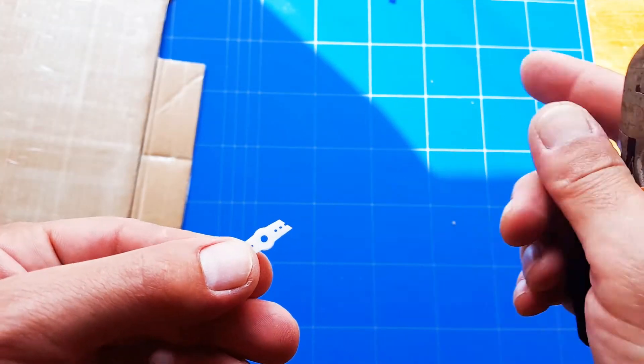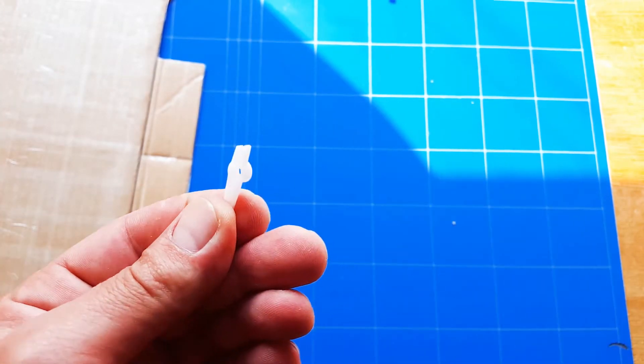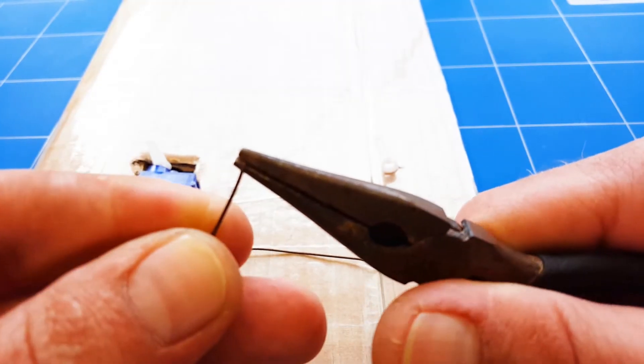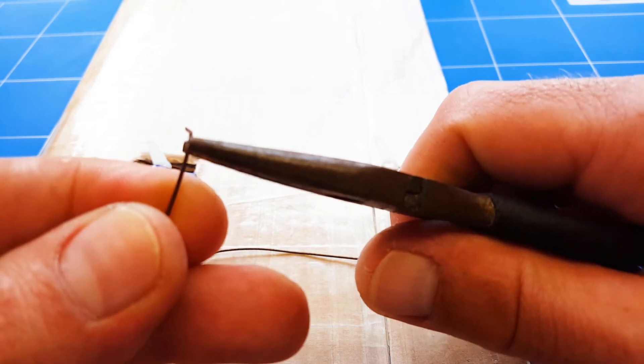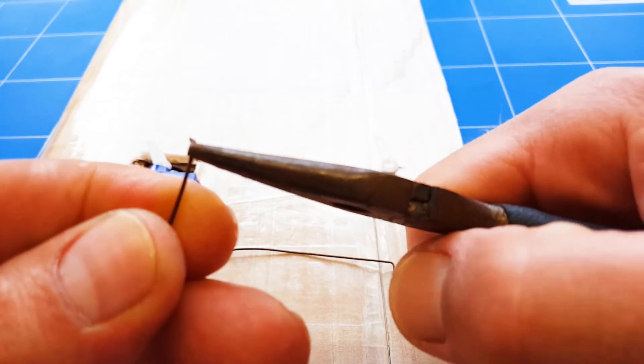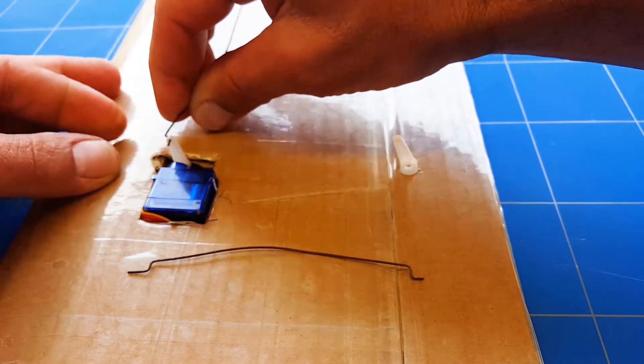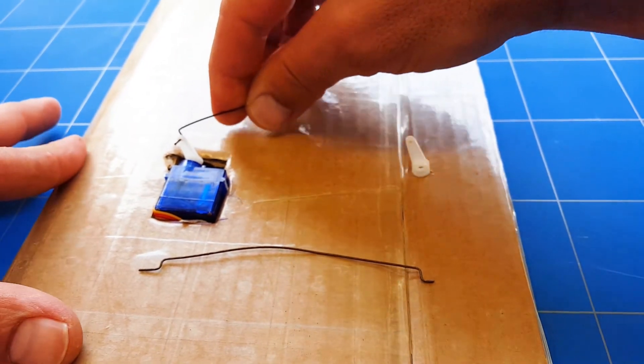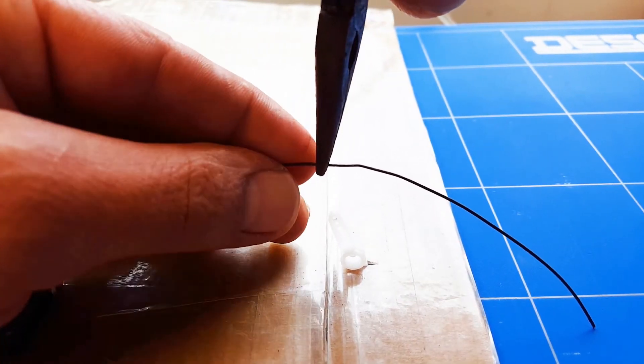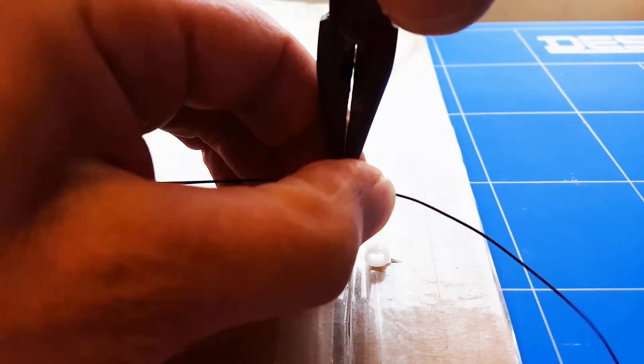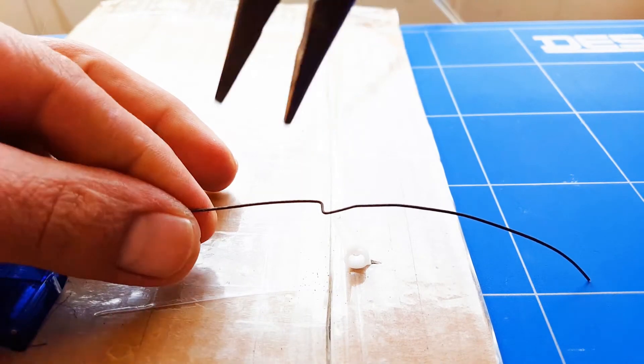We also need to make a servo rod. We're going to make this out of welding wire using my pliers, making two simple bends. Push it through the horn so we can measure the length that we're going to need. Then mark it, make another bend and another one to make your Z, and then just cut it off to length.